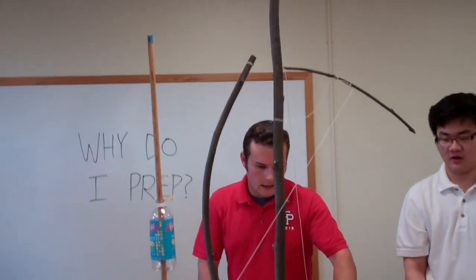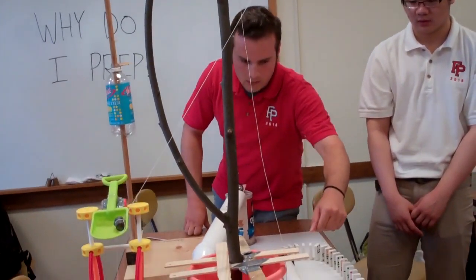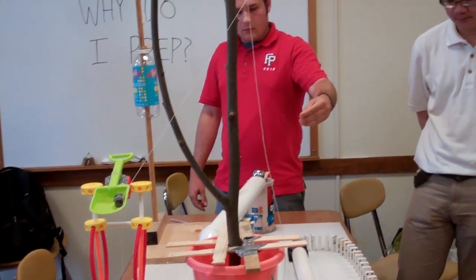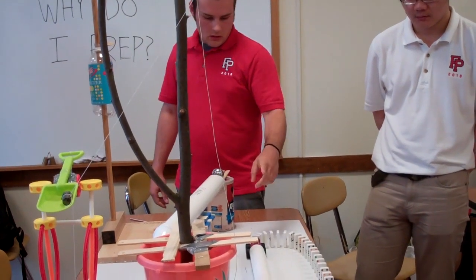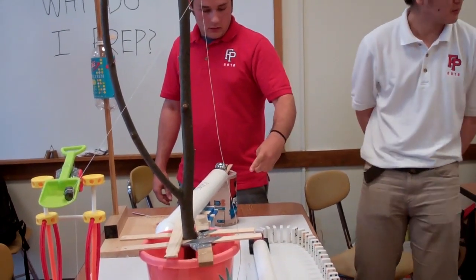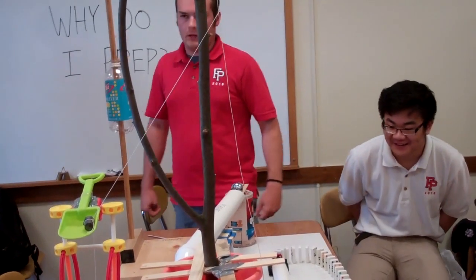And then that string which is attached, pulls this like credit card, which is holding back a marble, pulls it out, the marble goes down the tube, hits this toy truck, hits the dominoes and ends up turning the mousetrap.